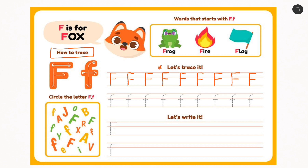Now for small f, we go and curve a little down from top to bottom, then left to right. We repeat the exact same thing — curve a little down, left to right, curve a little down, left to right. Then we curve a little down, left to right. Very good.